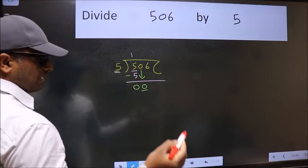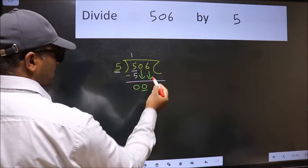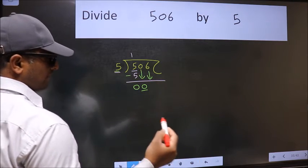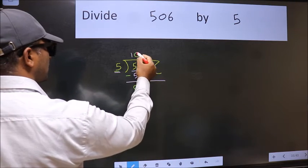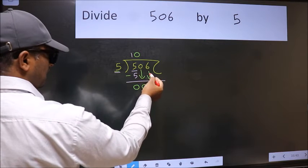So we should bring down the second number. And the rule to bring down second number is we should put 0 here. Then only we can bring this number down.